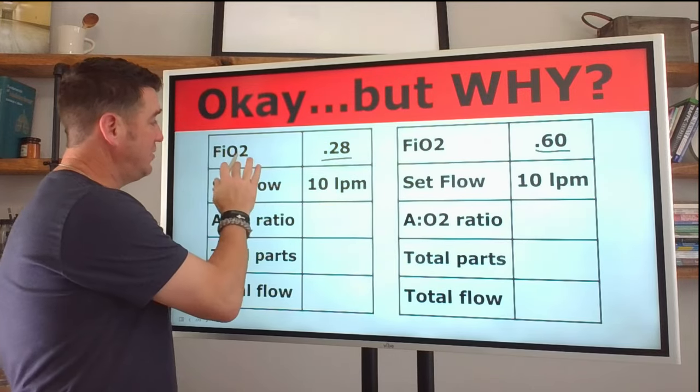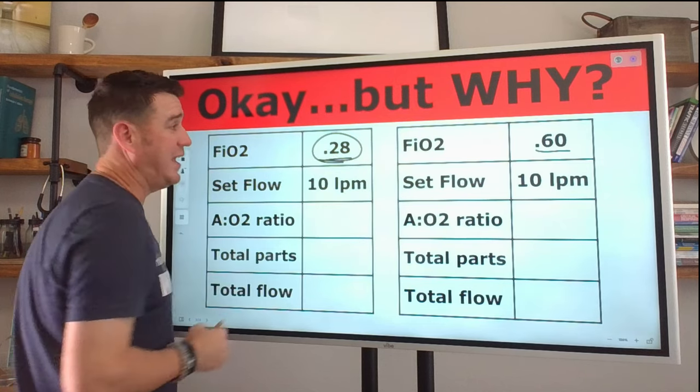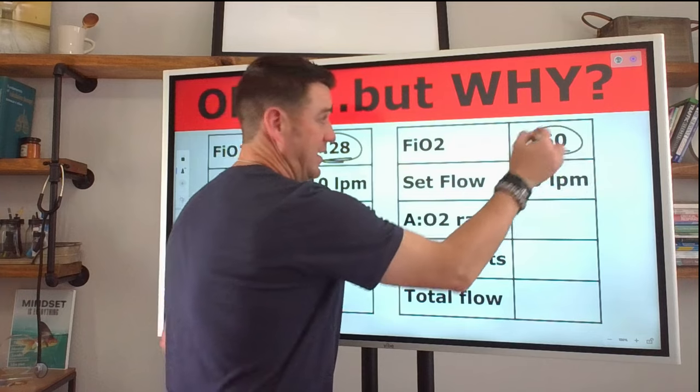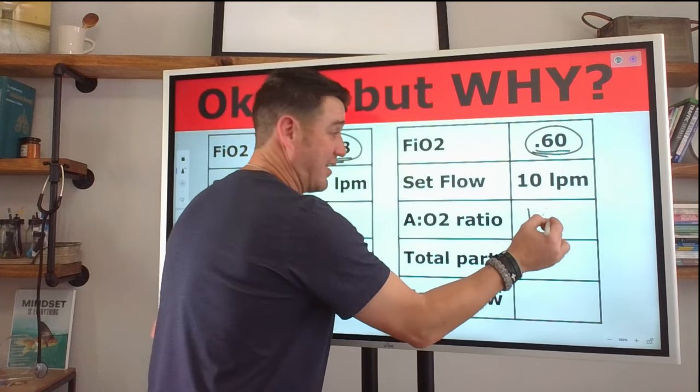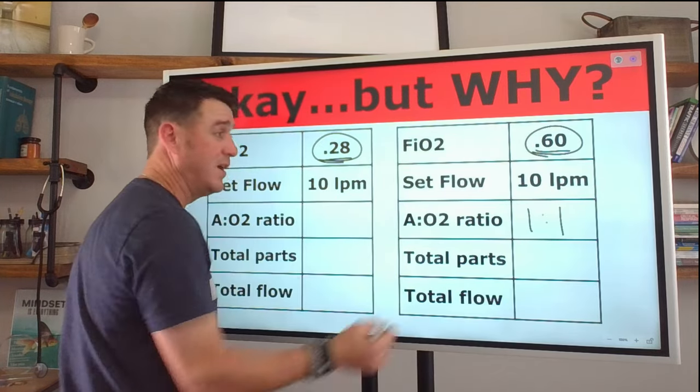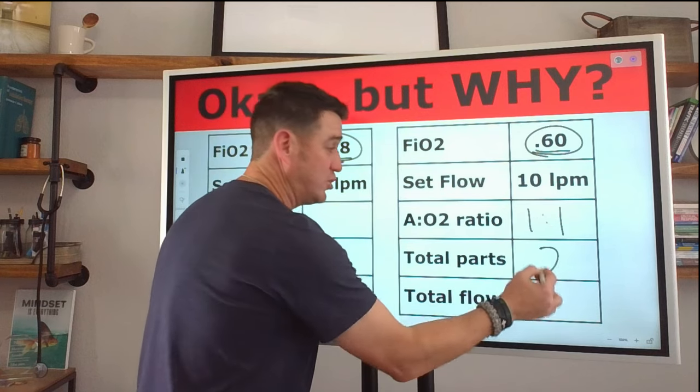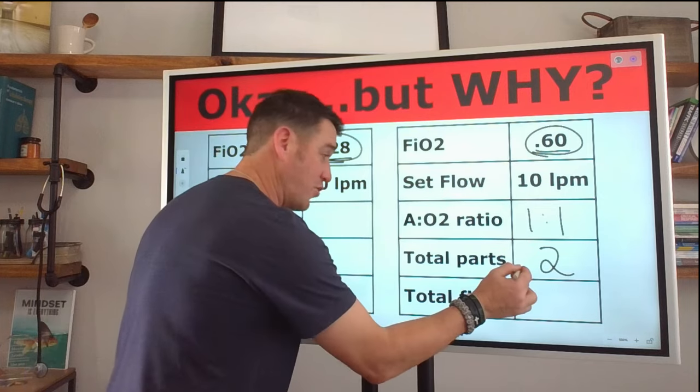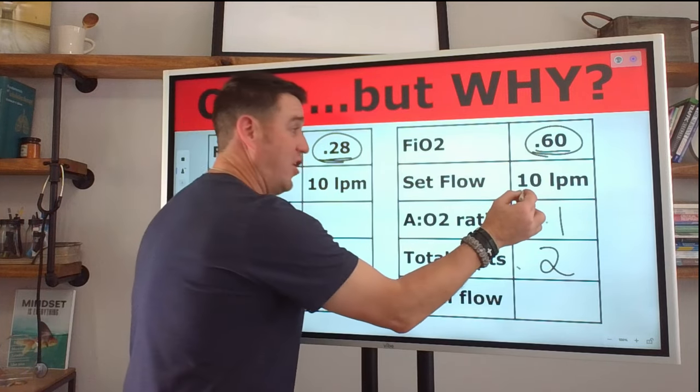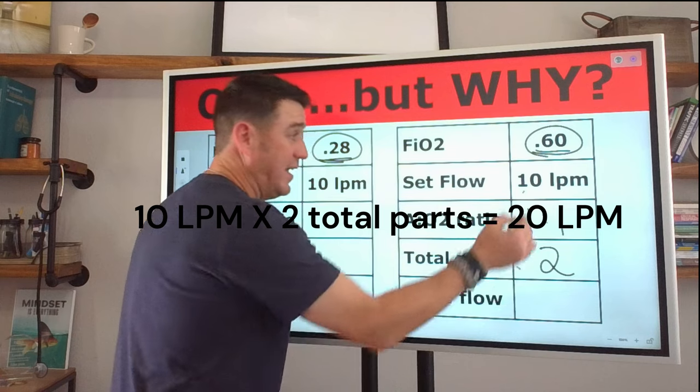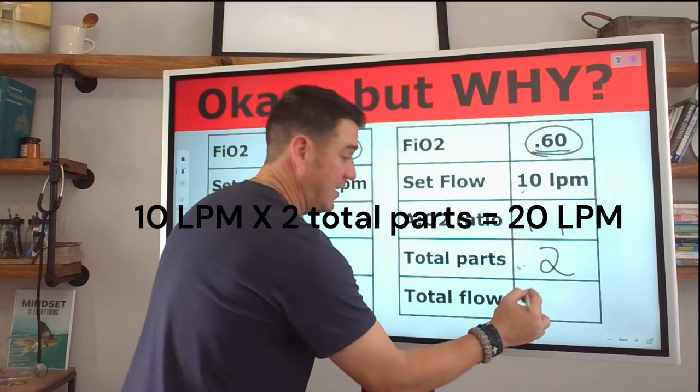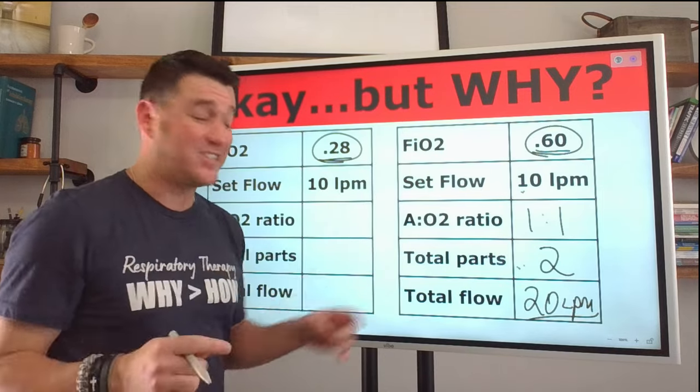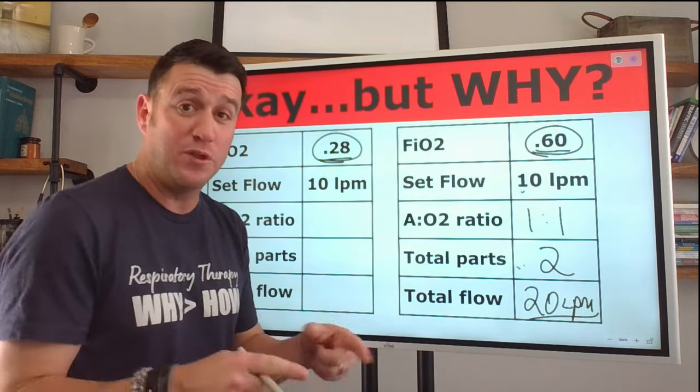I'm going to keep working here. Now I told you that for our FiO2, we're working here at 28%. Now we already did 60%. We know that 60% the air to oxygen ratio was one to one, one plus one equals two total parts. Now two total parts at a flow of 10 liters per minute, 10 times two equals 20 liters per minute.